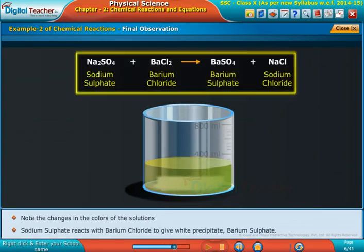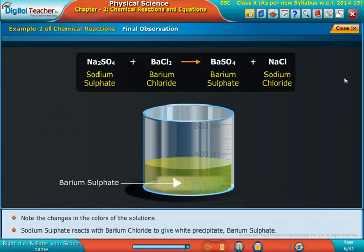Sodium sulfate reacts with barium chloride to give white precipitate, barium sulfate.